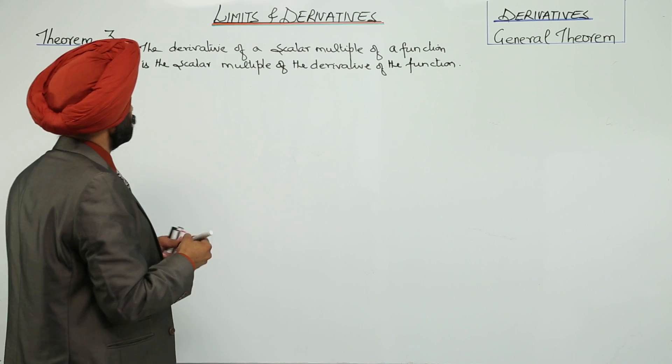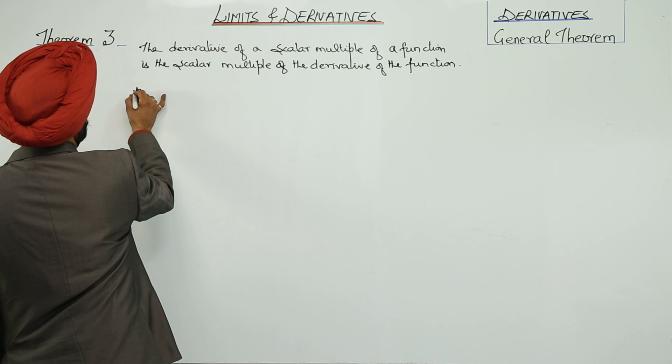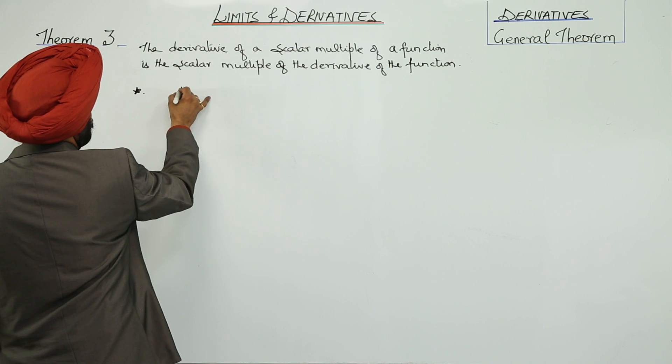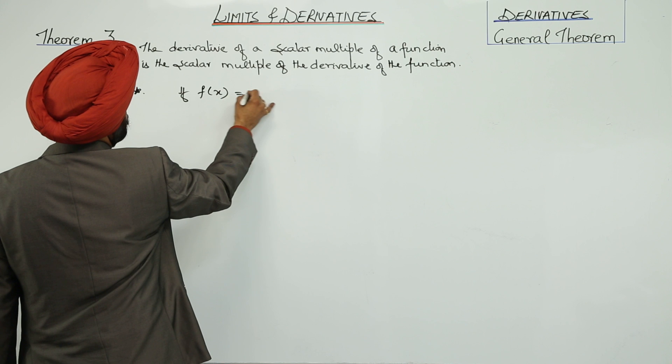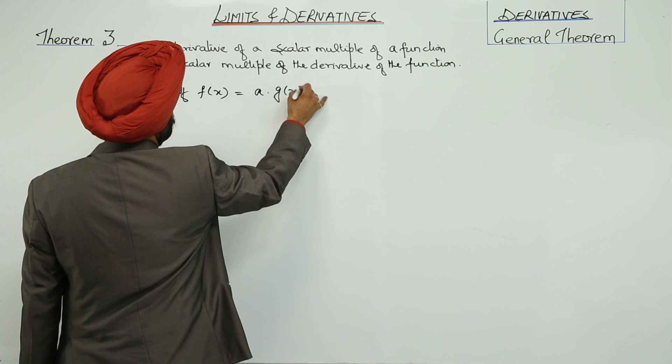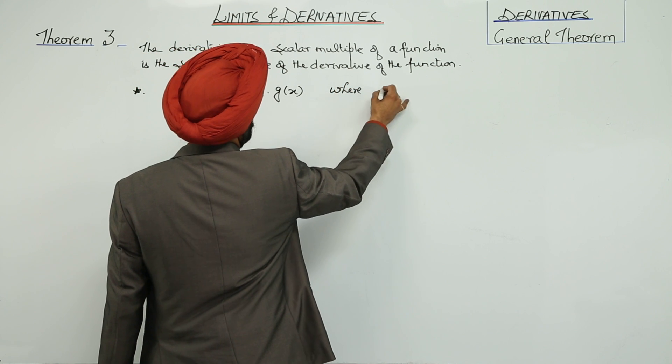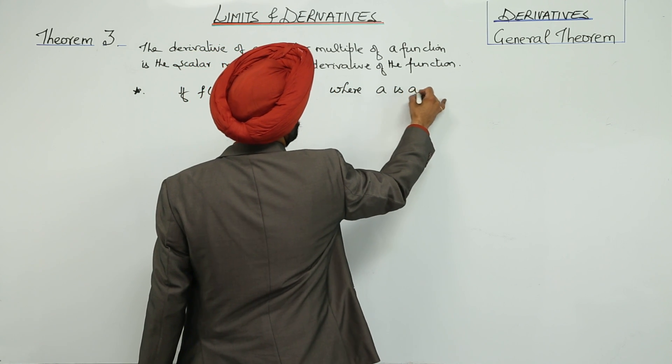What does this mean? If f(x) is equal to a times g(x), where a is a scalar multiple,